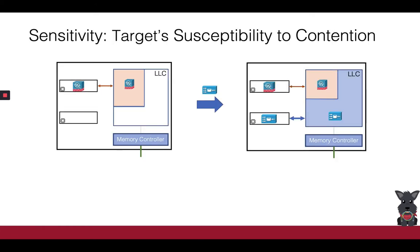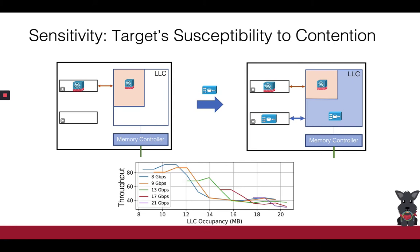Sensitivity is a property of the target NF that quantifies how susceptible the target is to slowdown due to competitors' contentiousness. In this visual example, we show the case where the firewall runs alone on the server and achieves a baseline level of throughput. Once a competing NF is added to the mix, the competitor starts occupying its own share of resources and might thus cause slowdown for the target NF. We define target sensitivity as the function that estimates the target's throughput relative to competitor's contentiousness. We find that in practice, sensitivity is a complex, non-linear, and NF-specific function, and that modeling it is challenging.